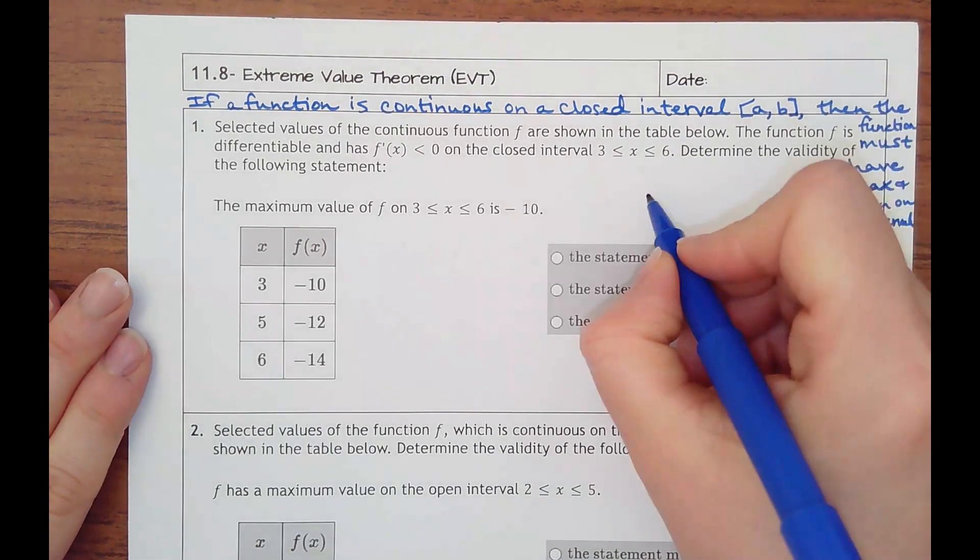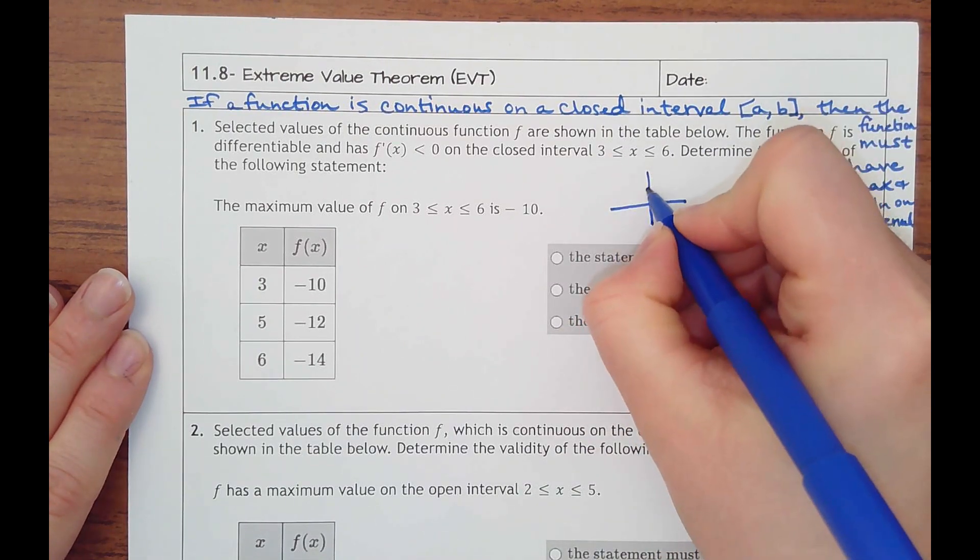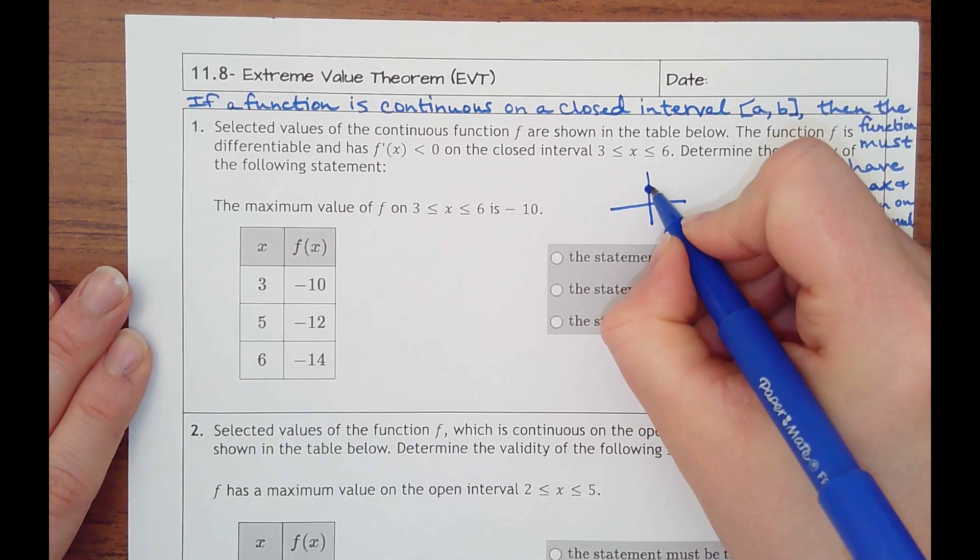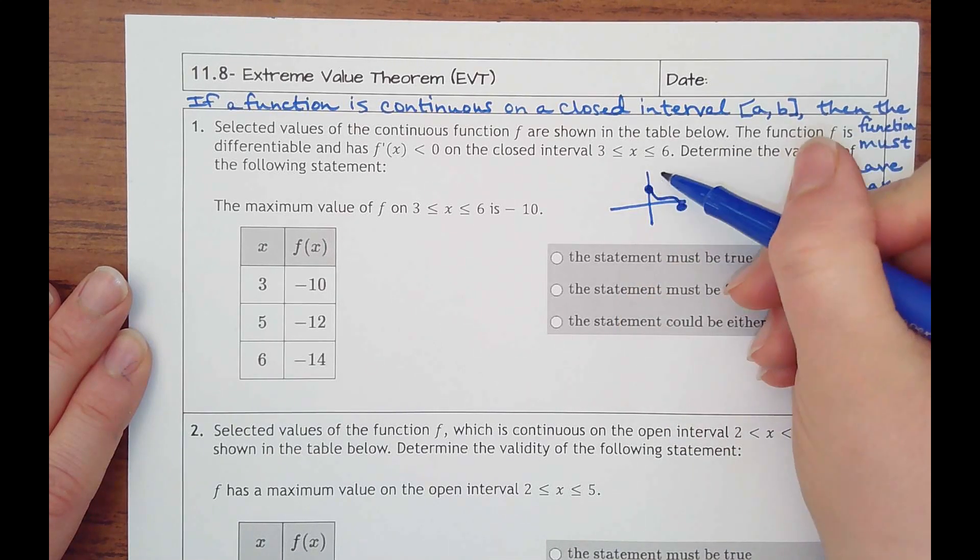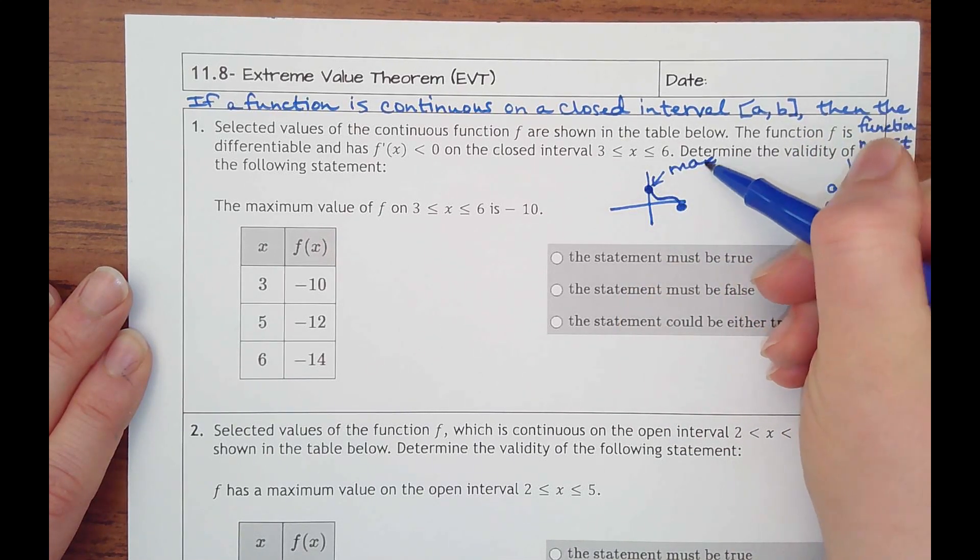Because remember, we've talked about a function that's got closed points on each side. So even if it did this, it has to have a max and a min.